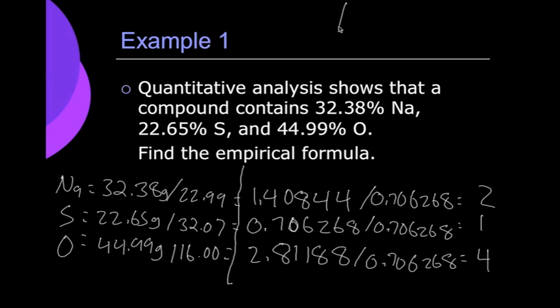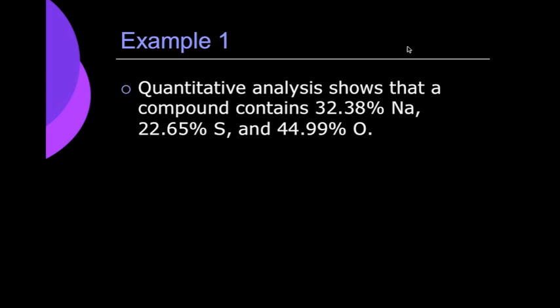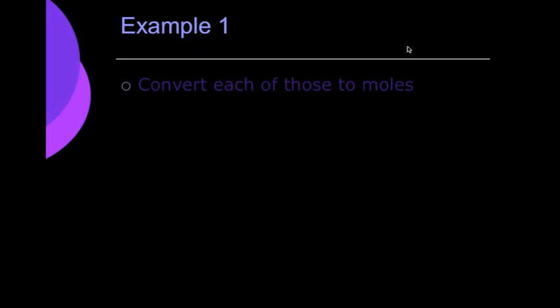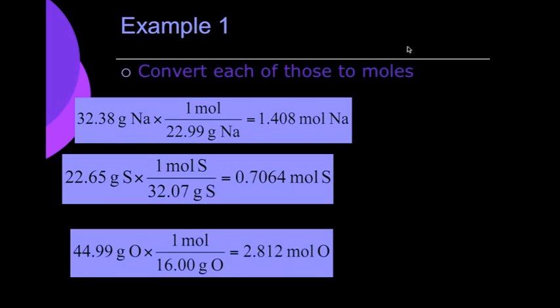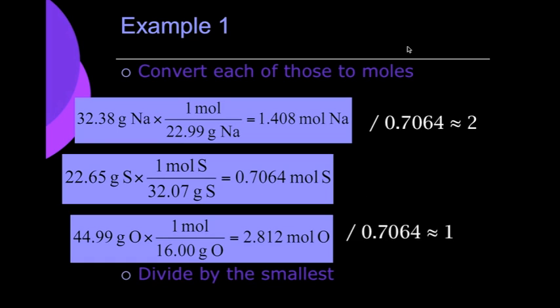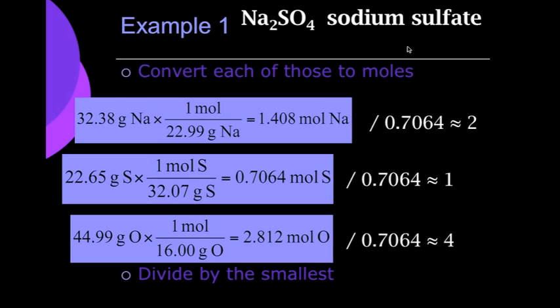So our formula is basically just going to be Na2SO4, which is sodium sulfate. So written out all nice and neat, it'll look like this. You see we converted it to grams. Then we convert those into moles, and then we go ahead and divide that on out, and we see we get right around that. And we get sodium sulfate.